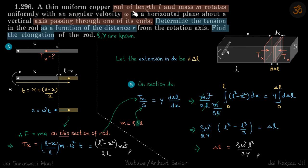We have a rod that is rotating with omega about one of its ends. We need to determine the tension in the rod as a function of distance R and the total elongation of the rod. The material's properties are known. First, let's determine tension.